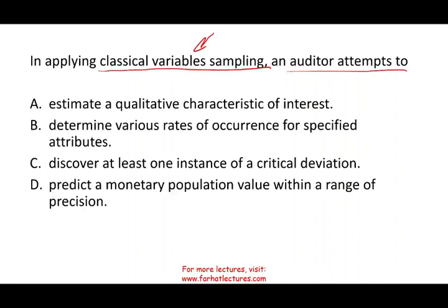Option A: estimate qualitative characteristics of interest — this is like attribute sampling for internal controls. A is out. Option B: determine the rate of occurrence for specified attributes — that's a test of control. B is out. Option C: discover at least one instance of critical deviation — that's discovery sampling, looking for a particular error like fraud. C is out. By process of elimination, D: predict a monetary population value within a range of precision. As I said, estimate the dollar amount of the population within a range of precision — that's exactly what classical variable sampling does. I have 30 to 40 minutes of lectures plus illustration on this topic on my website.